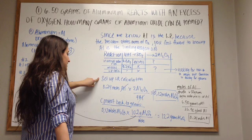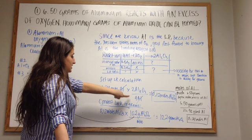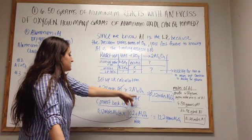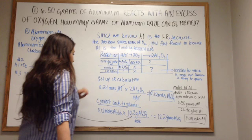We then set up the limiting reagent calculations. We have 0.24 moles of aluminum times 2Al2O3 over 4Al. As we know from the balanced equation, we do this dimensional analysis, so we cross out the Al, and we end up with 0.12 moles of Al2O3 after completing this problem.